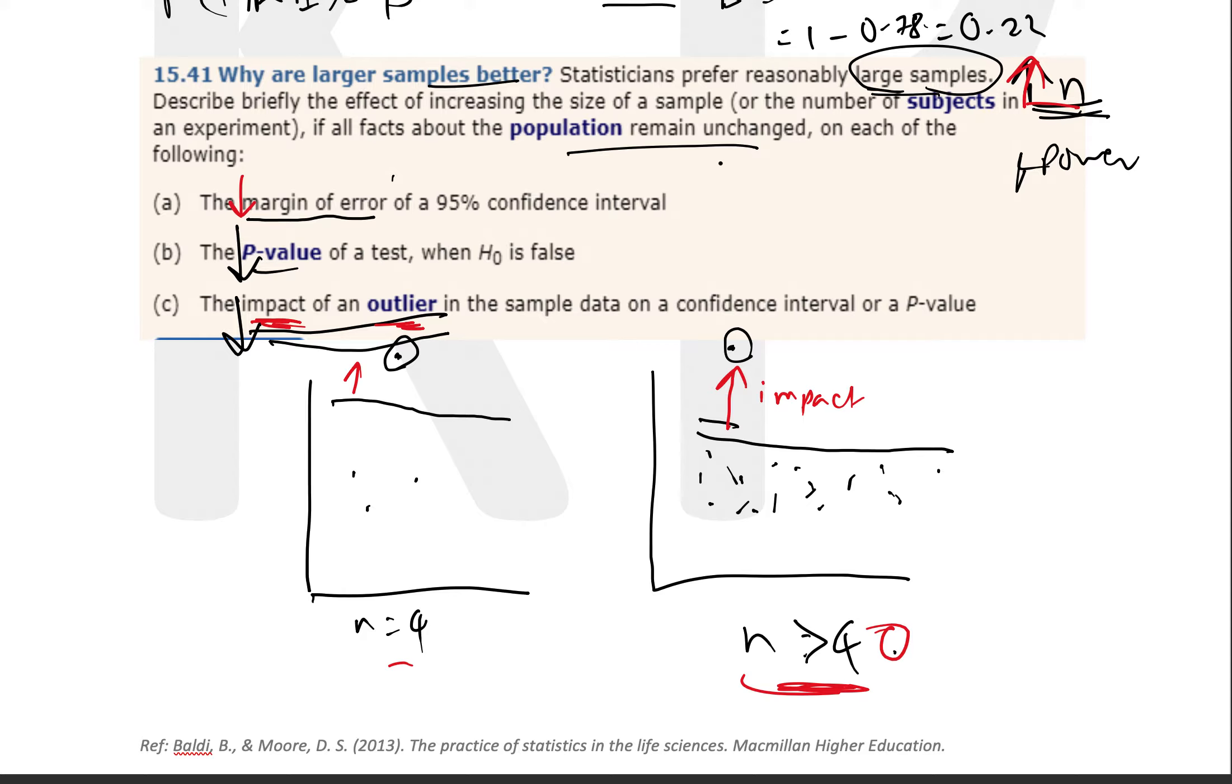Margin of error is going to decrease because now we have more samples. That's one way that we actually increase precision as well as accuracy by keeping the confidence interval the same, right?